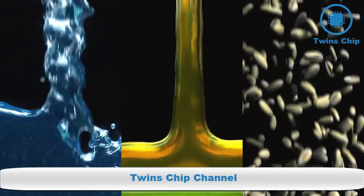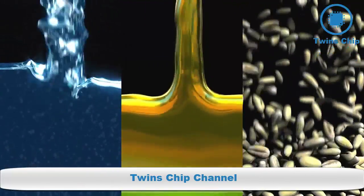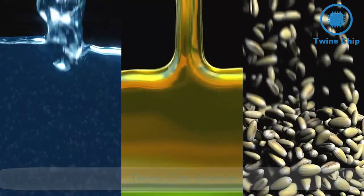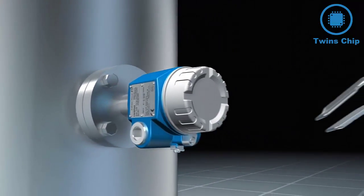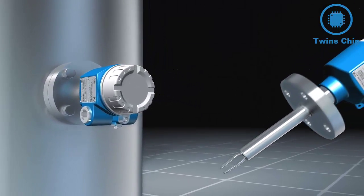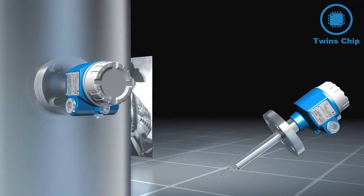Since these media can have completely different properties, there are different measuring principles to detect them. For example, point level measurement in liquids or bulk solids according to the Vibronic principle, also called tuning fork principle.